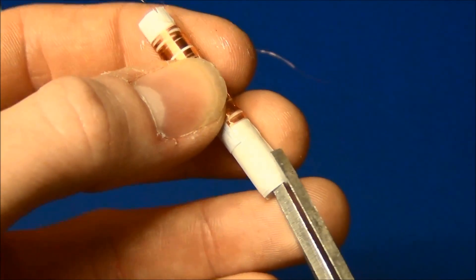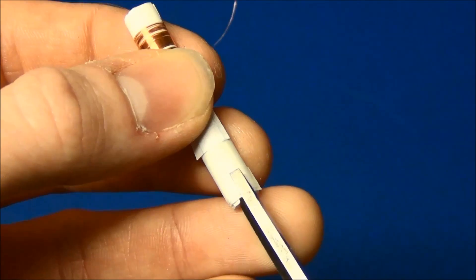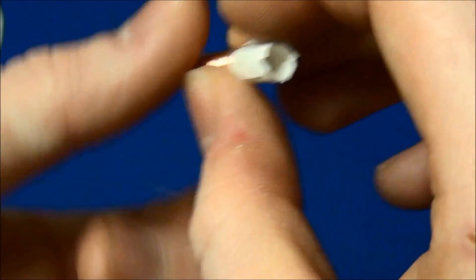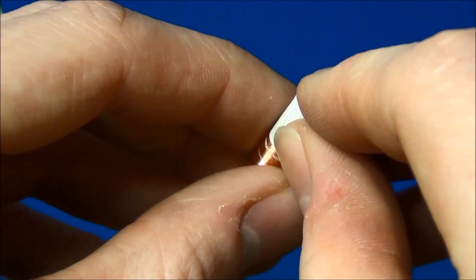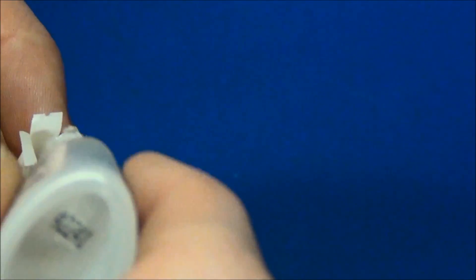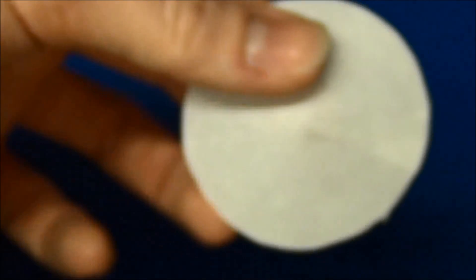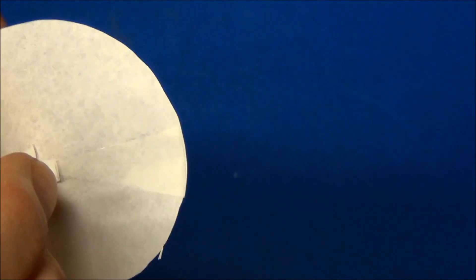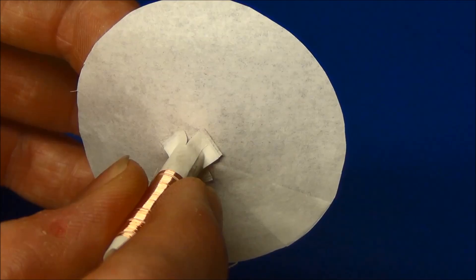Now make four cuts into the end of the tube and fold out the pieces. Add super glue and attach it to the center on the back side of the cone. Wait a few seconds for it to dry.